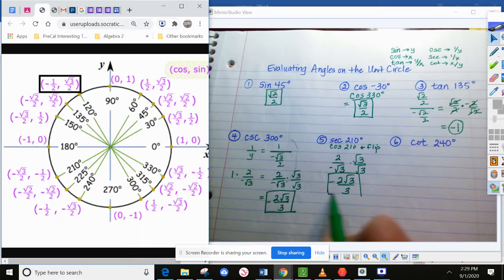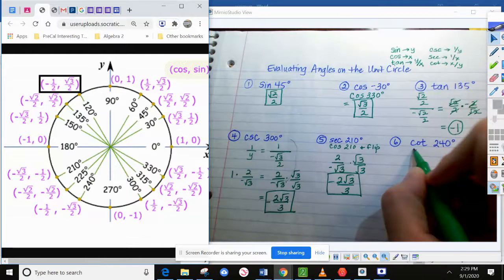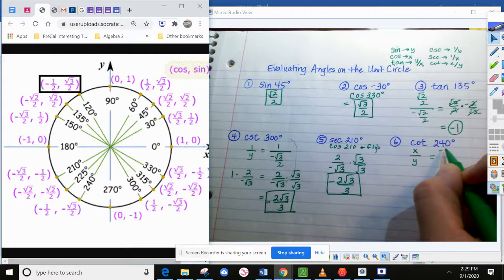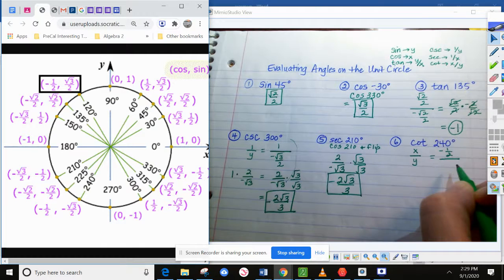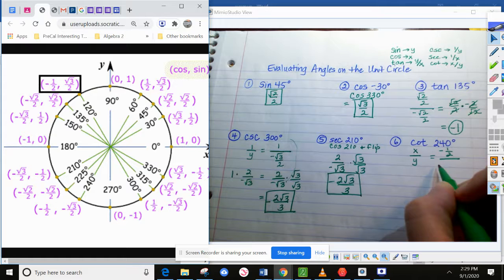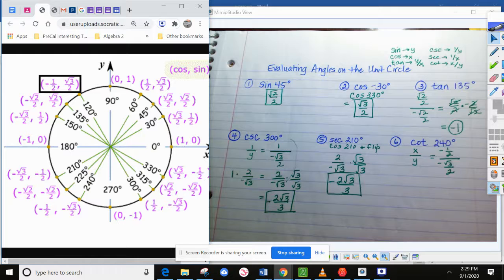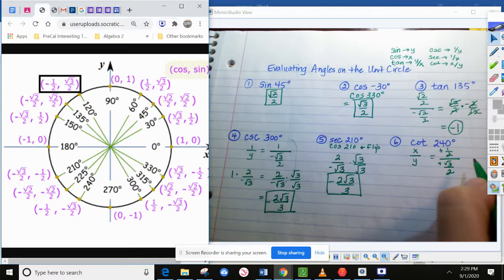All right. Last one, cotangent 240. So we need to do x divided by y. So let's find those coordinates. So we're doing negative 1 half divided by negative square root 3 over 2. One thing that I will do when I'm doing fractions like this, if both of these are negative, negative divided by negative is a positive anyway. So let's just go ahead and get rid of those. Then do a little keep, change, flip.